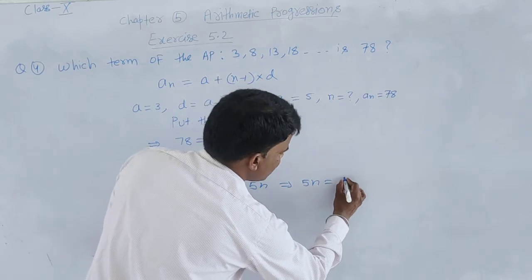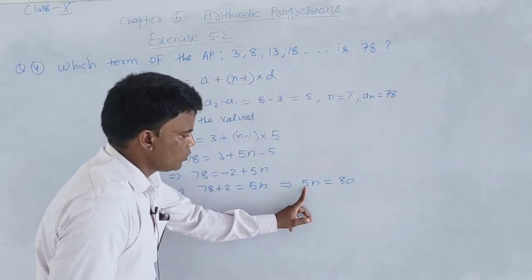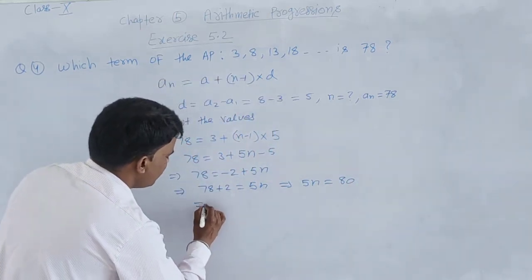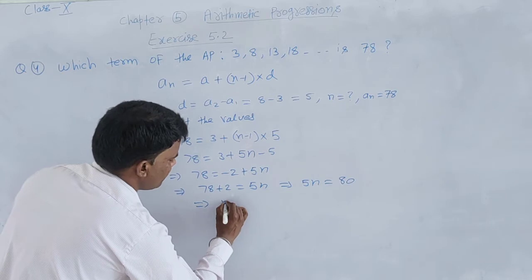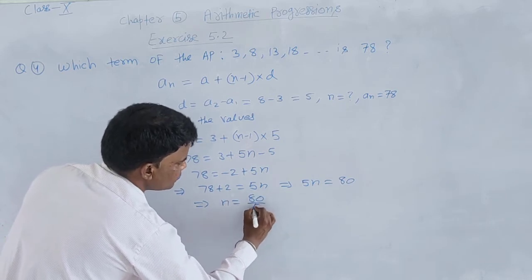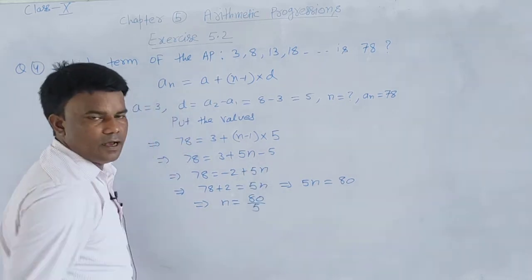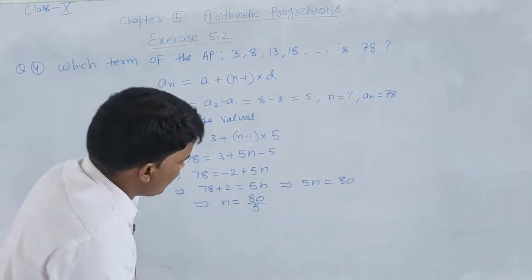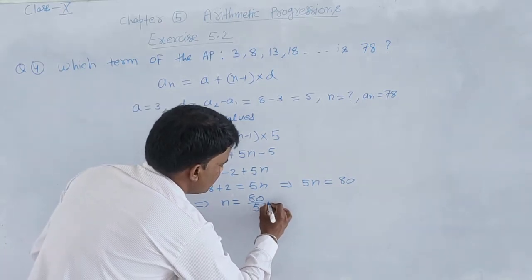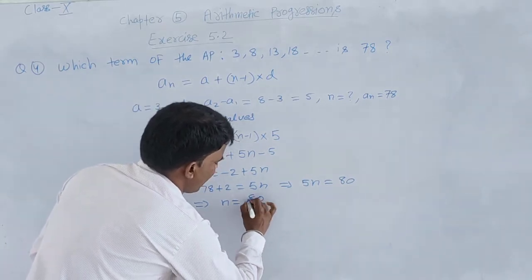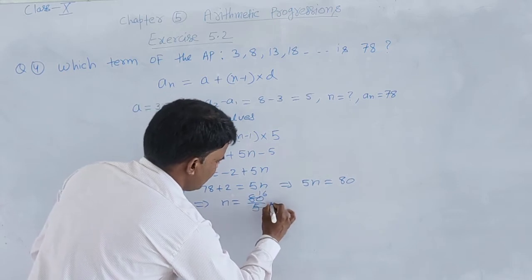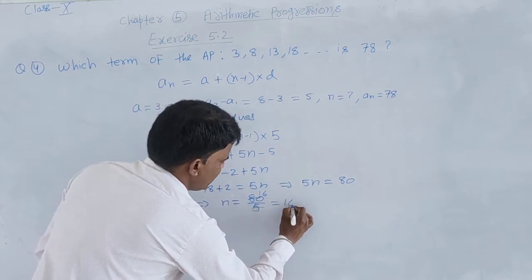80. Now dividing: n = 80 upon 5. Dividing 80 by 5 gives us 16. The value of n is 16.